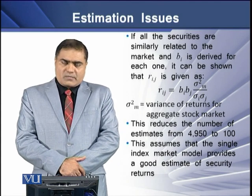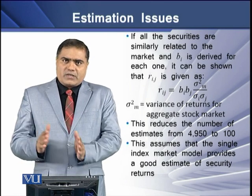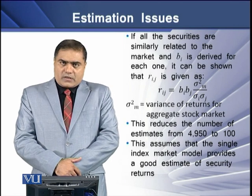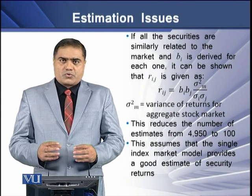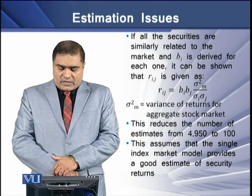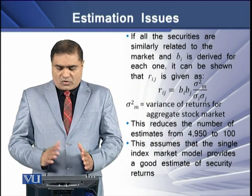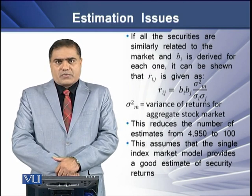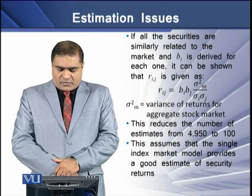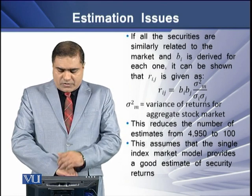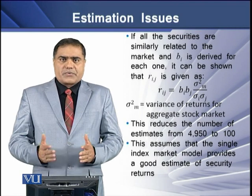If all securities are similarly related to the market and beta of security i is derived for each security, then the correlation between two assets is given by a formula where sigma-squared M is the variance of returns for the aggregate stock market. This equation reduces the number of estimates from 4,950 to 100, assuming the single index market model provides a good estimate of security returns.